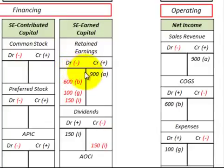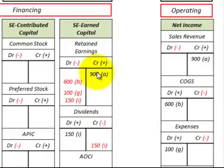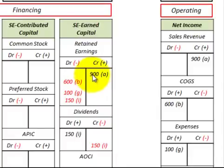That's absolutely true, but retained earnings gets reduced by any dividends paid out. So if the company paid out all its dividends, it would have zero in retained earnings. If it paid out no dividends, the retained earnings accumulate. It is a running total of what the company has earned less any dividends paid out.